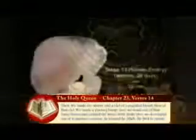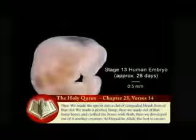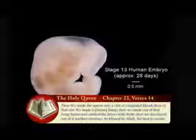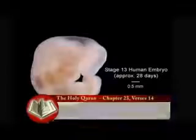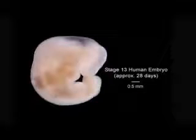This is the Mudga stage, Surah Al-Uminum, Ayah 1 to 14: 'Then we created the drop into a leech-like structure. Then of that leech-like structure, we made a chewed-like substance,' which you can see here, and begins during the sixth week.